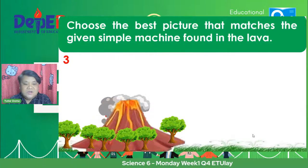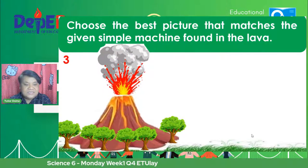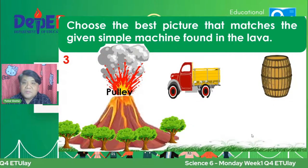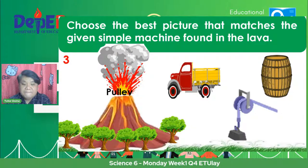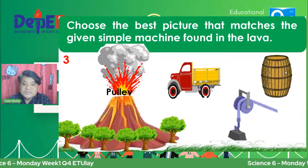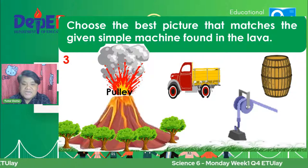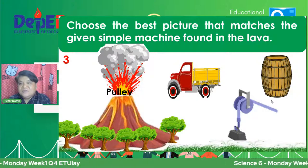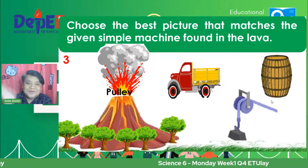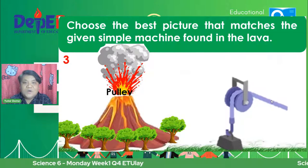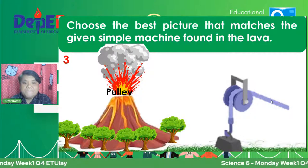Next, we have another picture coming from the lava, and that is the pulley. Which of the following pictures is the pulley? Yung truck ba, yung barrel, or itong piece of metal na nakasabit? Good afternoon, Catherine Trinidad from Hagonoy East. So the answer for this is, of course, that object. That is a pulley.